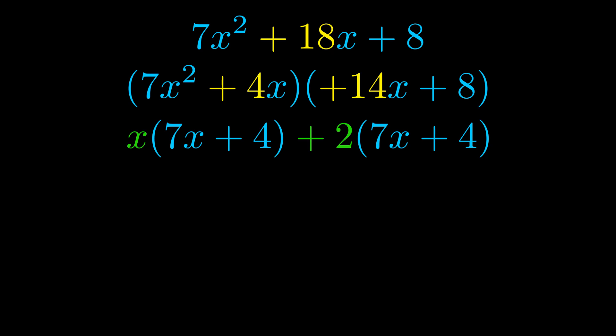Notice also how what remains inside of the parentheses is the same in both cases. The blue values are the same. Those blue values will become one of our factors and we will combine the two green values, the GCFs that we pulled out, to get the other one. And that is our fully factored equation.